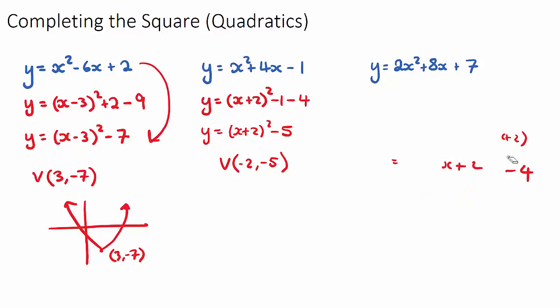Okay, so this last example, this is a bit of a trickier one. If we have a value here in front of our x squared which is not 1, it's 2, for example, we need to do a little bit of an extra step. So we have y equals, what we want to do is we want to factor out the 2, whatever this a value is from the first two terms. So we're going to have 2 bracket x squared plus 4x, and then we have our remaining constant plus 7.